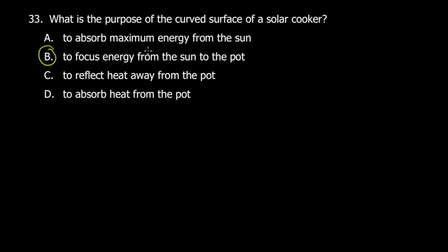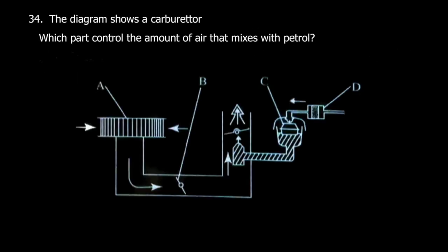We don't want the curved surface to absorb any energy. We want the pot or the pan to absorb as much energy as possible. Let's move to number 34. The diagram shows a carburetor. Which part controls the amount of air that mixes with petrol?